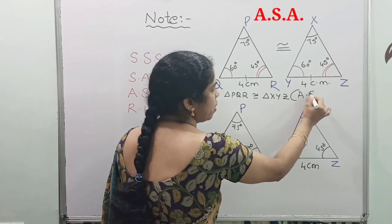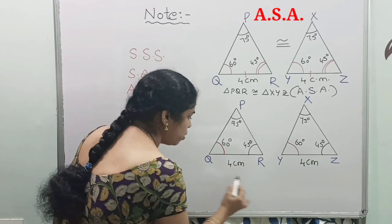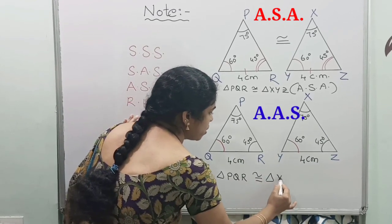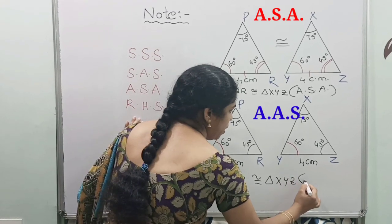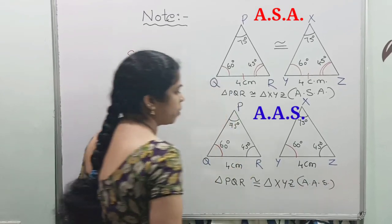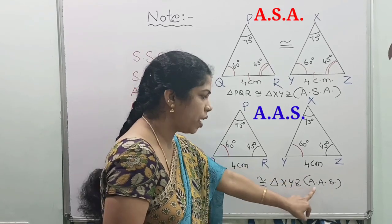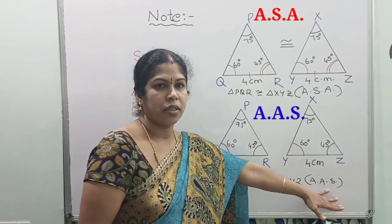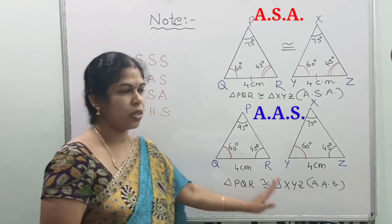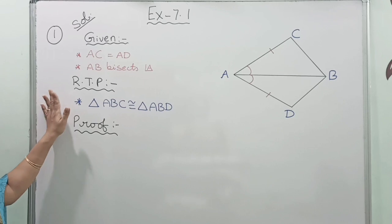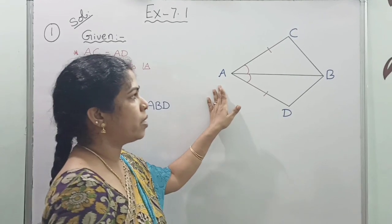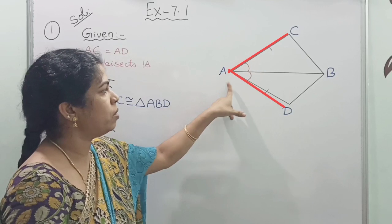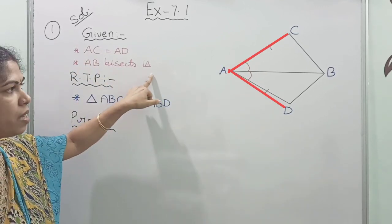You can write it as AAS congruency. In ASA congruency the side is included between the two angles, whereas in AAS the side is not between the two angles. You can apply the AAS congruency rule in solving the exercise problems — remember both these points. So the first question is: in quadrilateral ACBD, given that AC equals AB, AC equals AD, and AB bisects angle A.